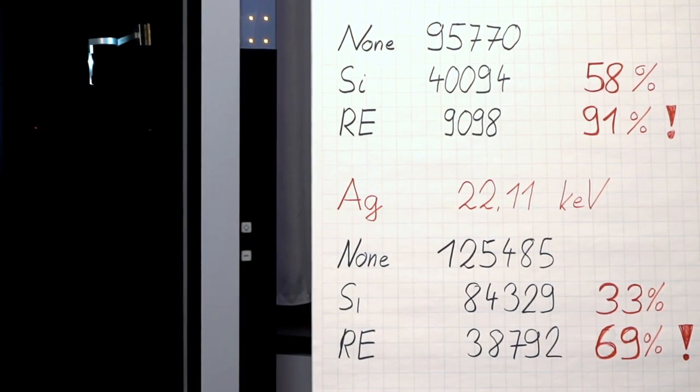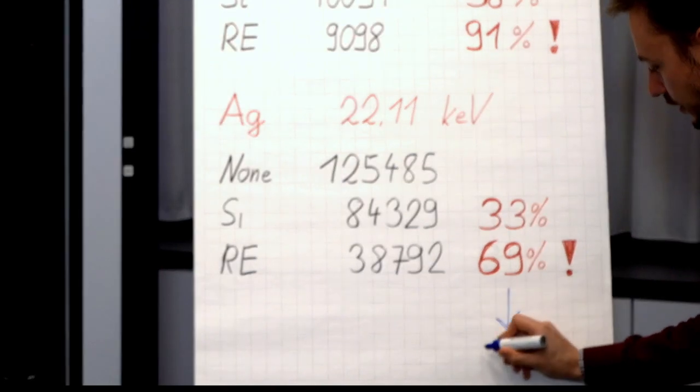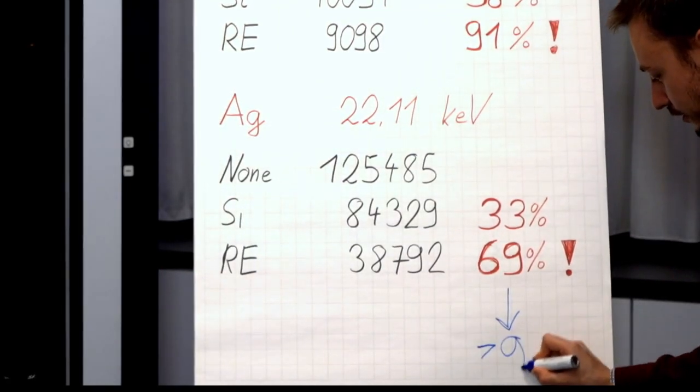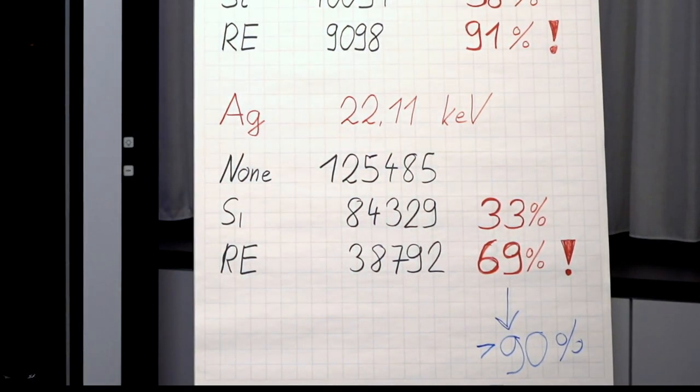So if you have a silver specific application we just use another conversion material and you can push even absorption of silver radiation up to over 90 percent and having an almost perfect detector even for this hard radiation.